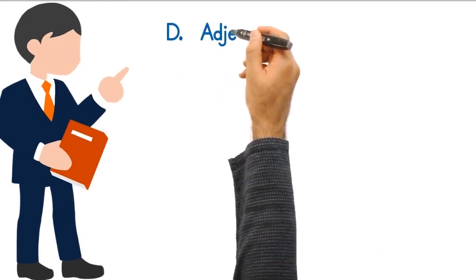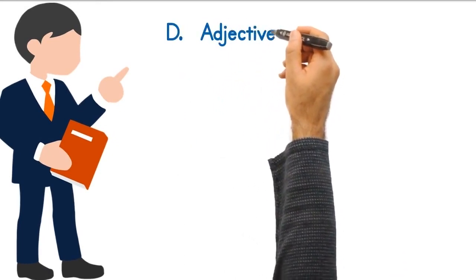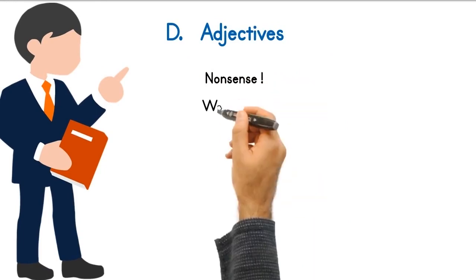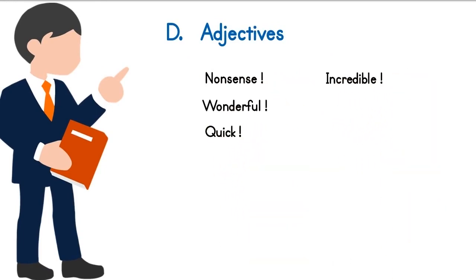D. The following are examples of adjectives used as interjections: Nonsense, Wonderful, Quick, Incredible, Impossible, Terrific.